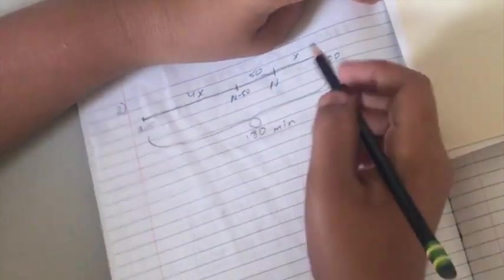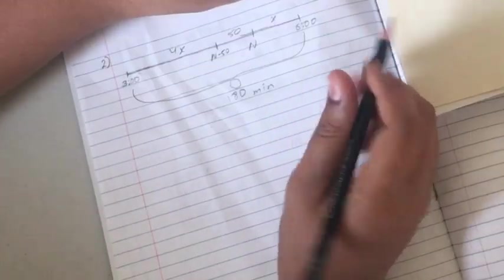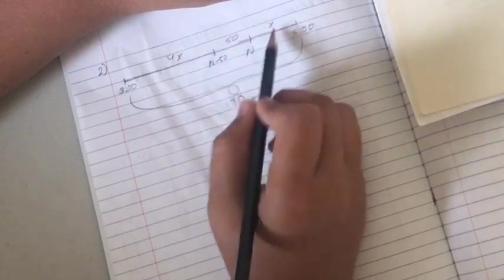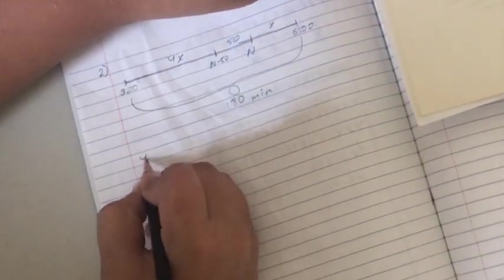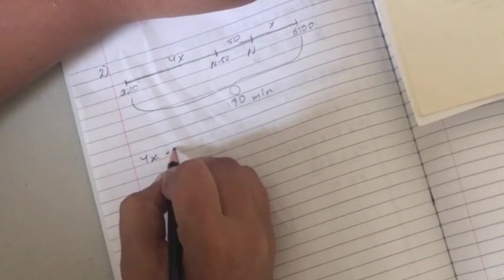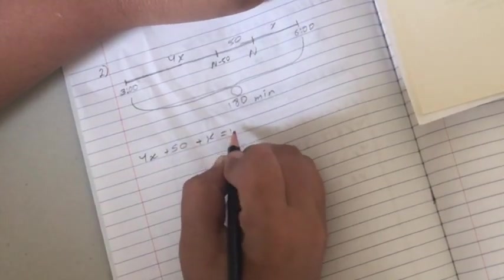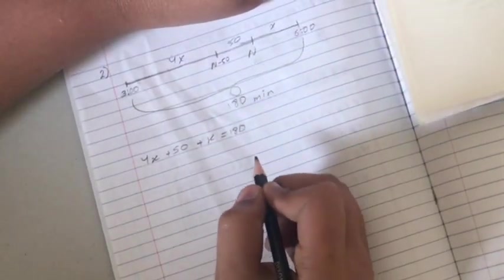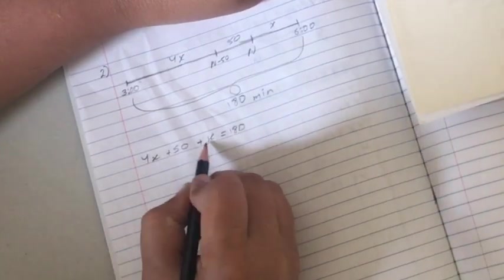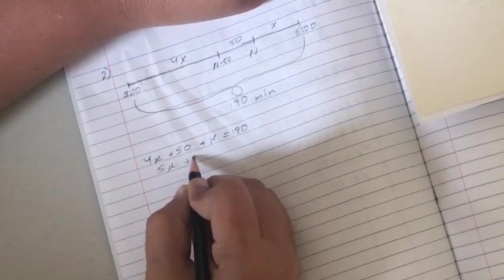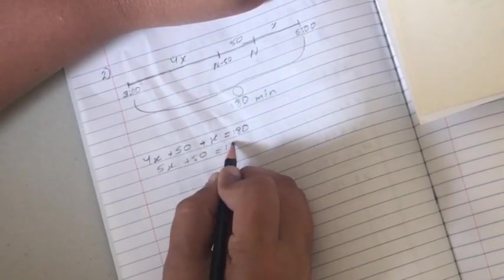So to find x we can just solve it algebraically, which means that this equals this. So 4x plus 50 plus x equals 180. 4x plus x, combining like terms, equals 5x plus 50 equals 180.